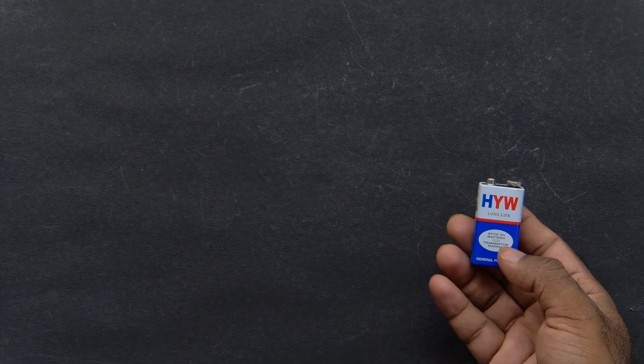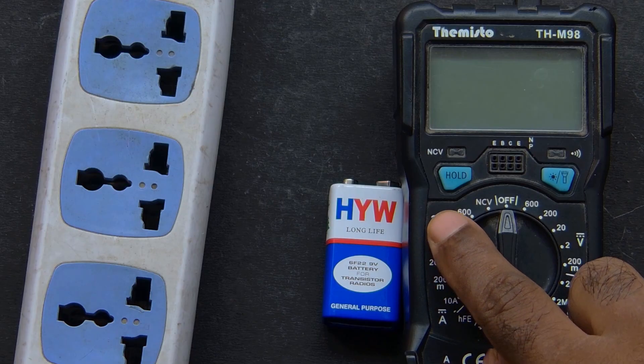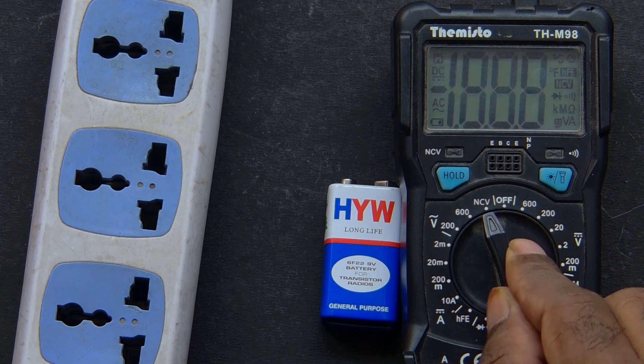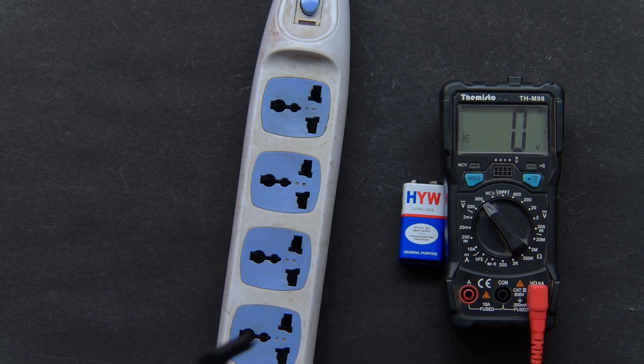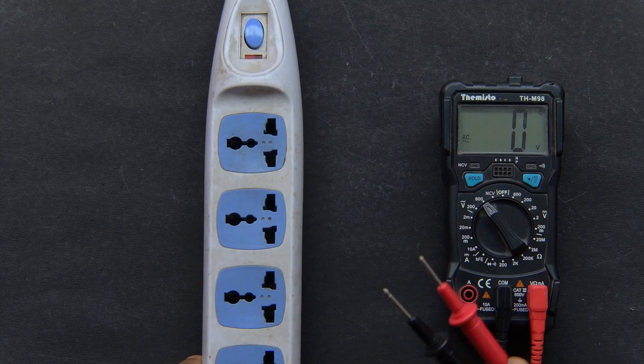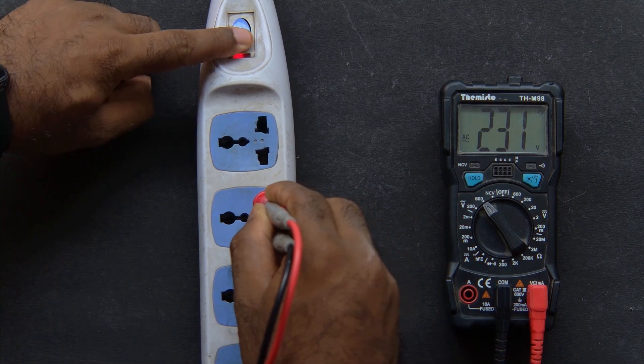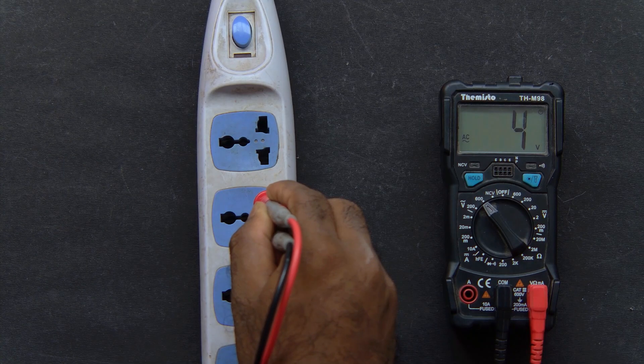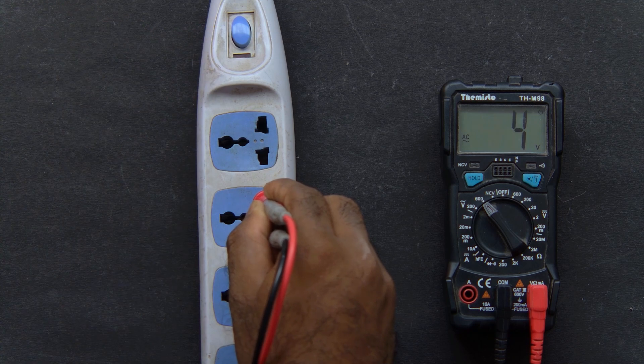Once you are comfortable with DC, you can try AC voltage. Turn the dial to the symbol with a V and a wave—that means AC voltage. Now use the same probe positions: red in voltage ohm milliampere, black in common. Carefully insert the probes into a wall socket. In India, you should see something between 220 to 240 volts. This is the most important test for electricians. It tells you whether a circuit is live.